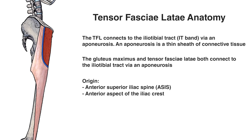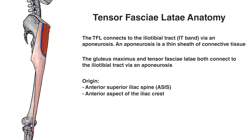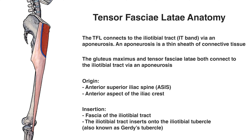Let's zoom out and take a look at the insertion point next. That's going to be on the iliotibial tract, and you can see that insertion point marked out here in blue. The TFL muscle connects directly to the iliotibial tract via an aponeurosis, and this aponeurosis connecting to the iliotibial tract is the insertion point for the TFL muscle.